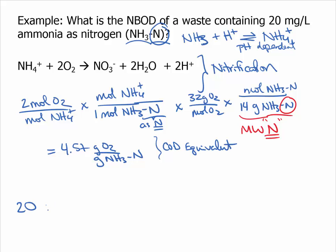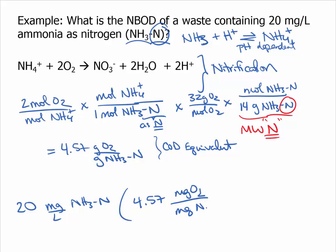To finish this problem, we begin with 20 milligrams per liter of ammonia as N and multiply by the COD equivalent of 4.57 milligrams of oxygen per milligram of ammonia as N. We will see that as that ammonia is metabolized by bacteria, they would consume 91.4 milligrams of oxygen per liter.